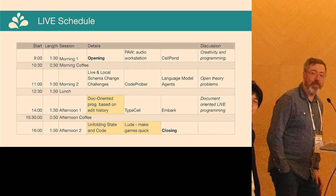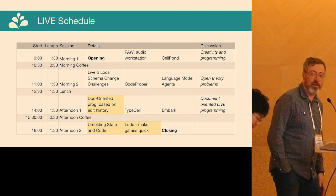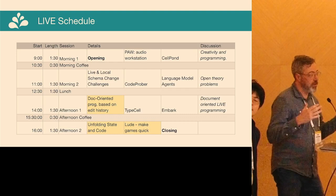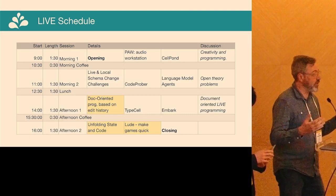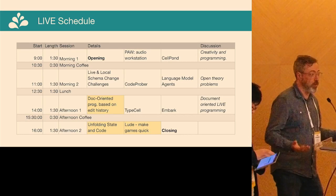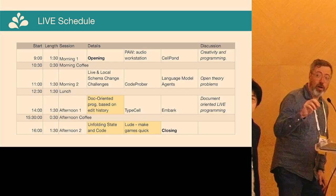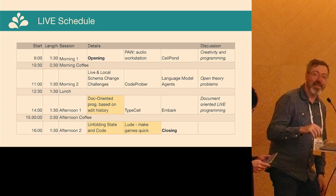We're going to see creative programming, theoretical computer science work, and built systems — a great mix. There are four blocks throughout the day, and we'll use leftover time at the end of each block to reflect on what we saw, ask questions, and dig into topics. Most people in the room are working in the field, so this is a chance to make it more than just sitting quietly all day. The first session is PAW the audio workstation and Cell Pond.